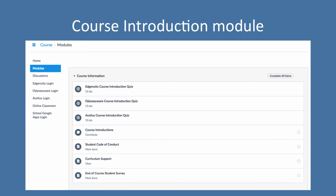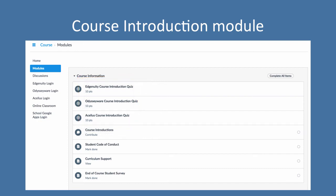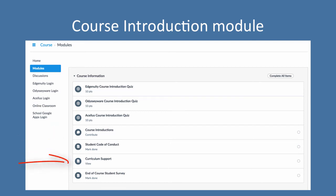The first thing you want to look for is the course quiz. Depending on what course you're in — Edgenuity, Odysseyware, or ASELUS — you'll have a quiz to help you get started. There's also a course introduction discussion question, a student code of conduct that we'd like you to look at, some curriculum support including videos and user guides, and then an end-of-course student survey.